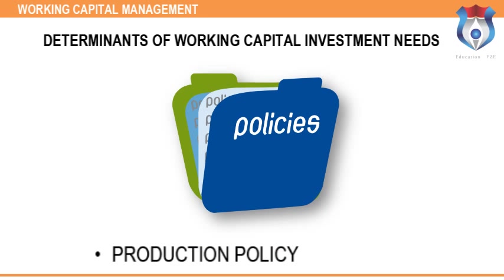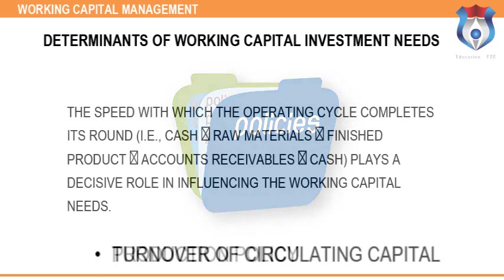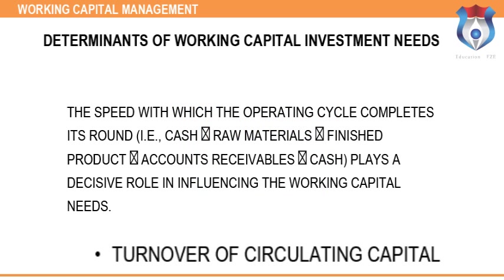Production policy: if a firm follows a steady production policy even when demand is seasonal, inventory will accumulate during off-season periods, resulting in higher inventory costs and risks. Turnover of circulating capital: the speed with which the operating cycle completes — cash to raw materials to finished product to accounts receivables to cash — plays a decisive role in influencing working capital needs.